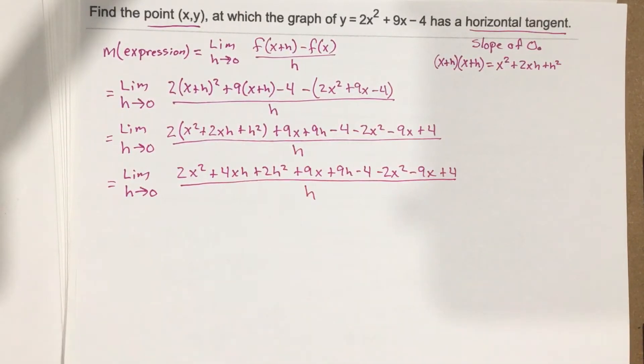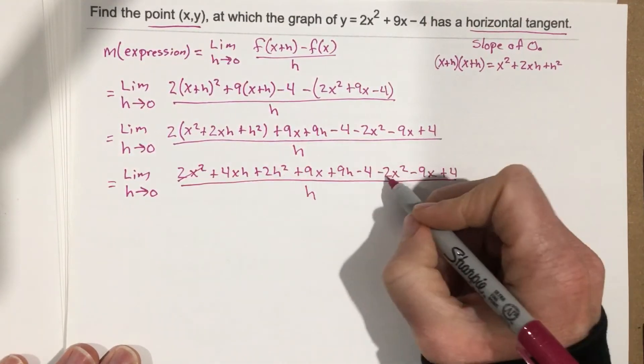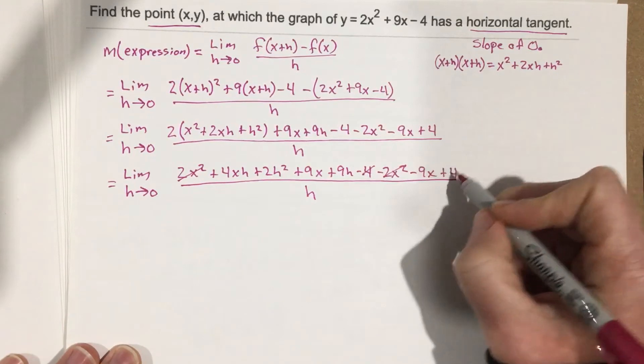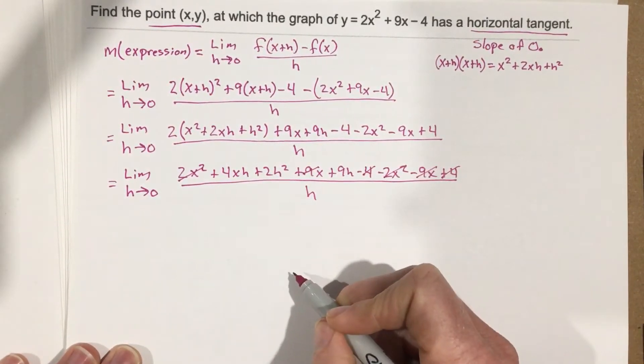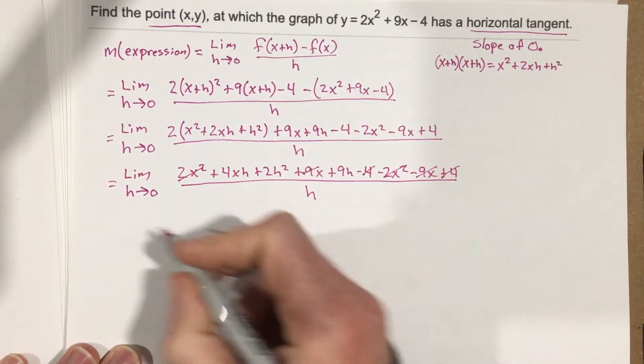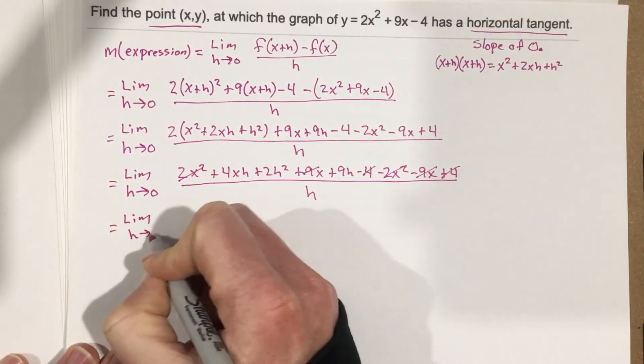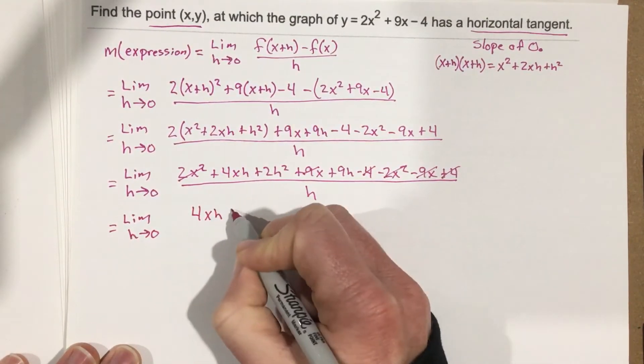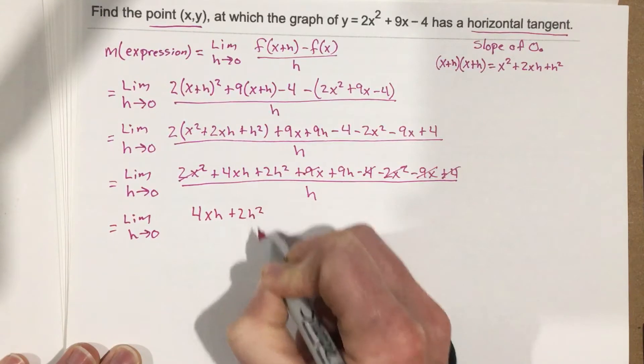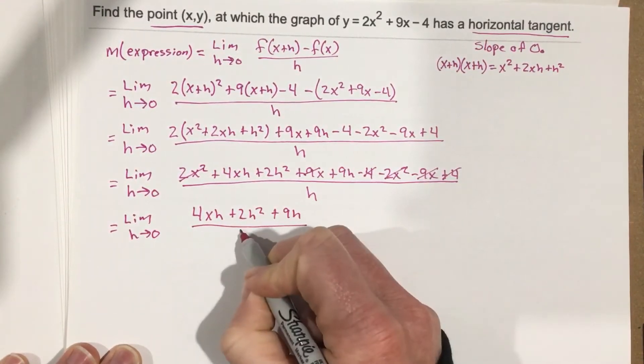Keep in mind our goal is to cancel h so that we don't have something that's undefined anymore. We need to cross out 2x² and negative 2x², negative 4 and positive 4, 9x and negative 9x. We're left with 4xh, so limit as h approaches 0, we end up with 4xh + 2h² + 9h all over h.